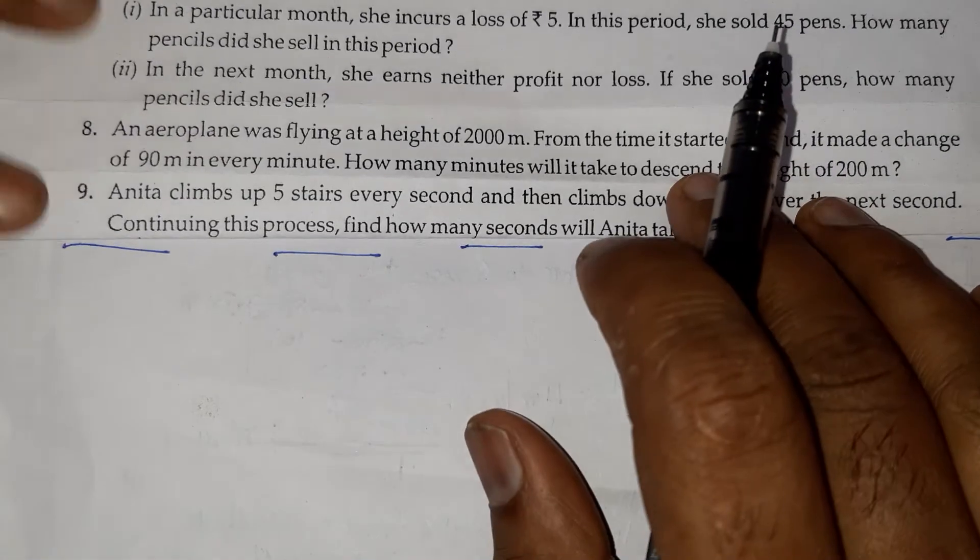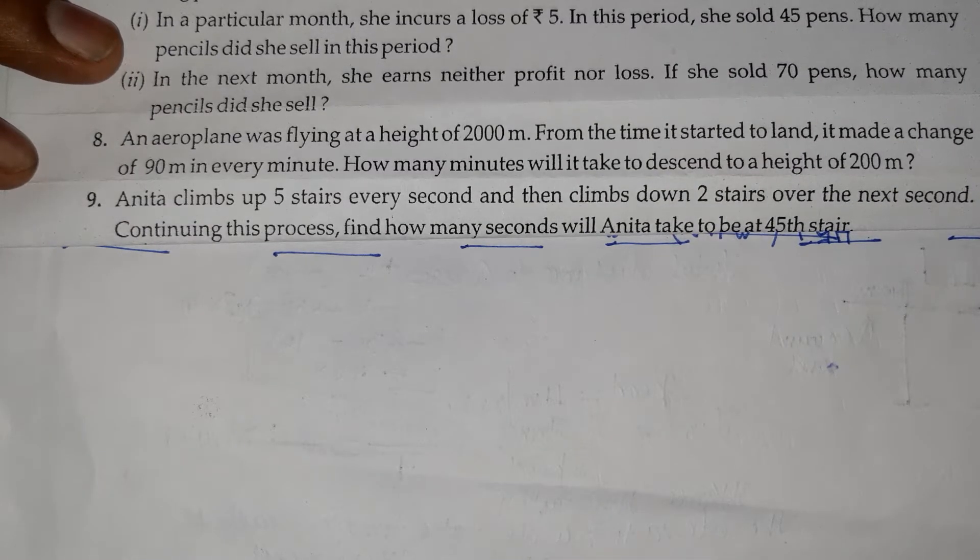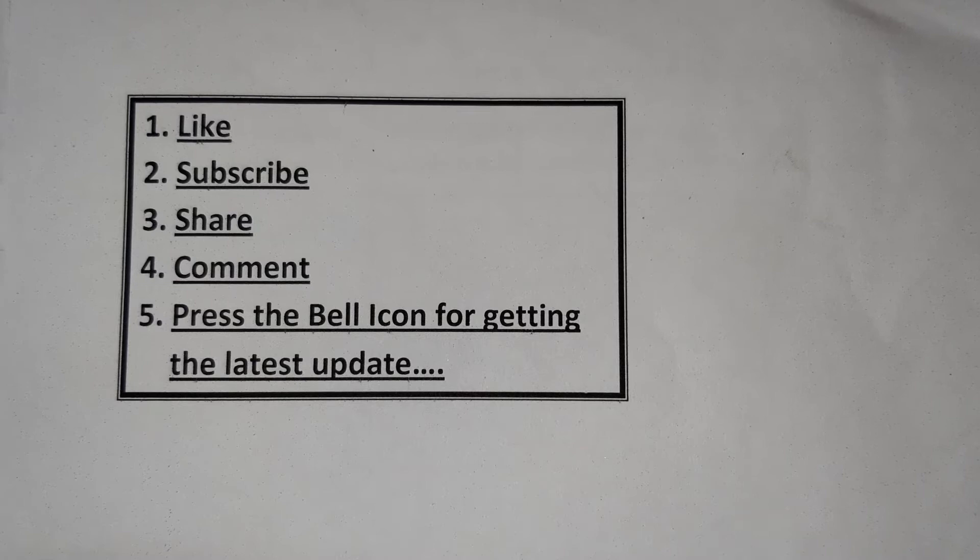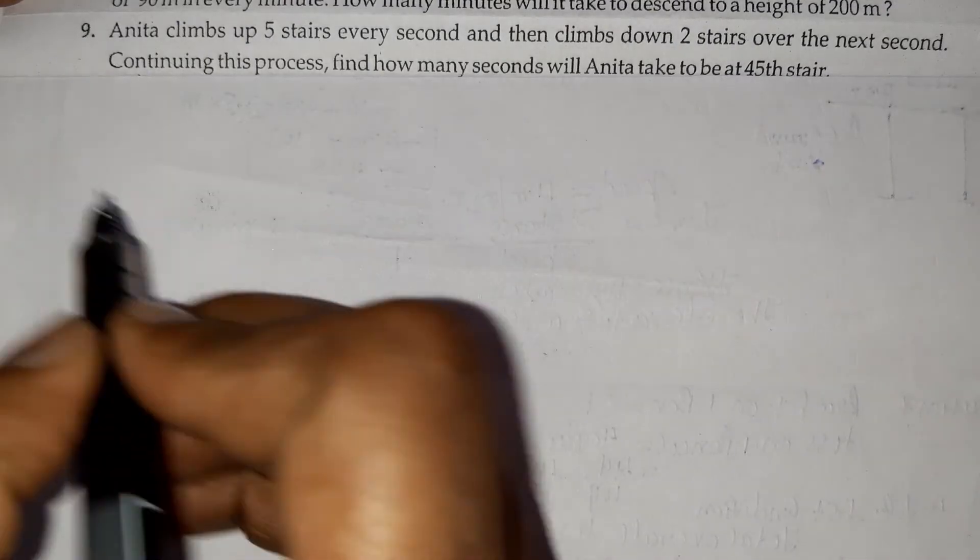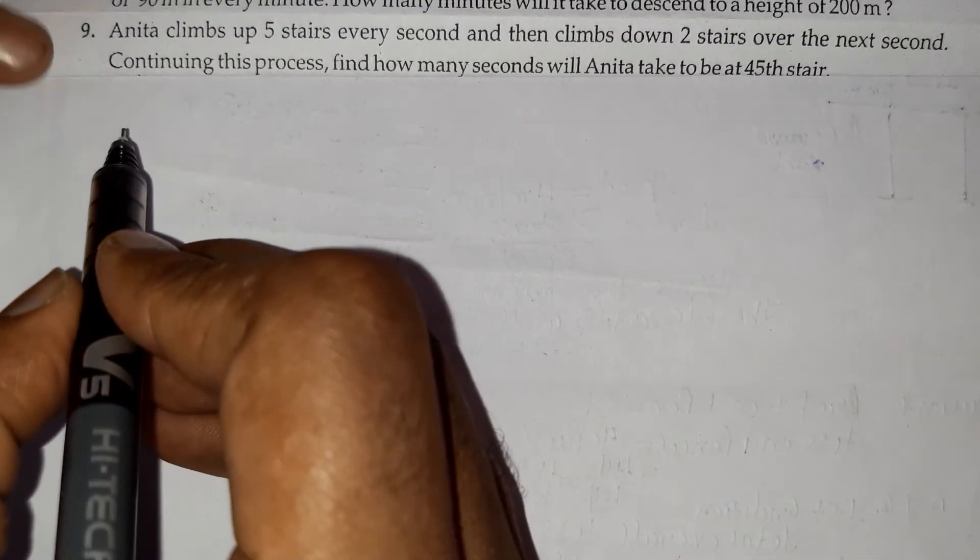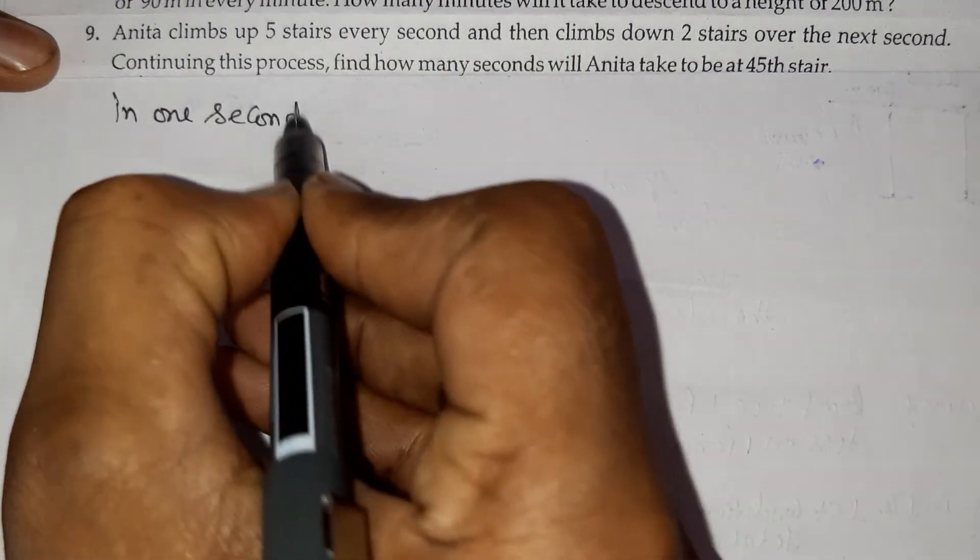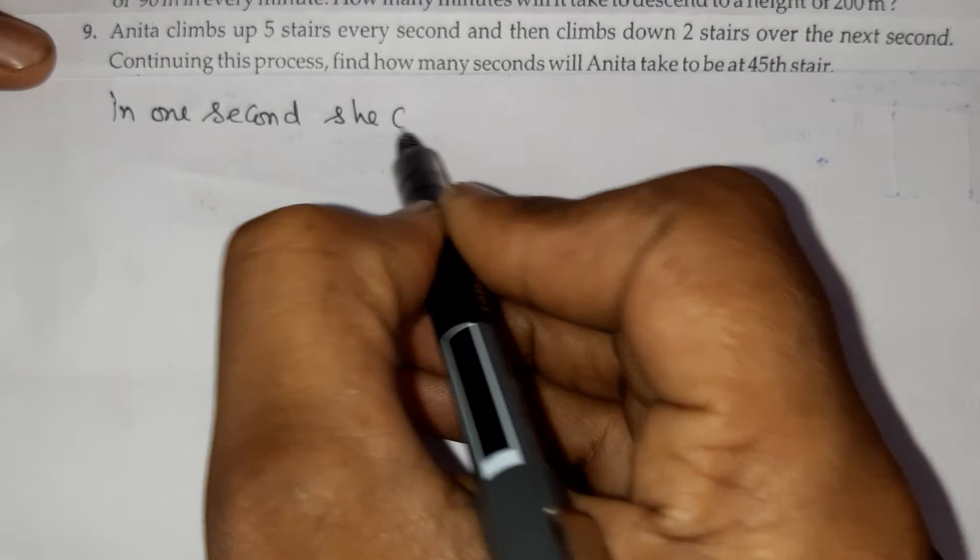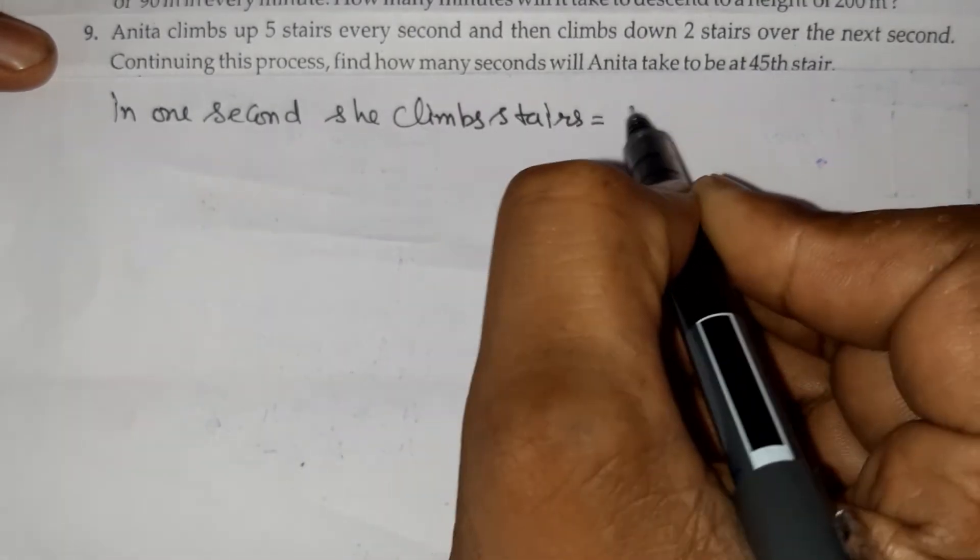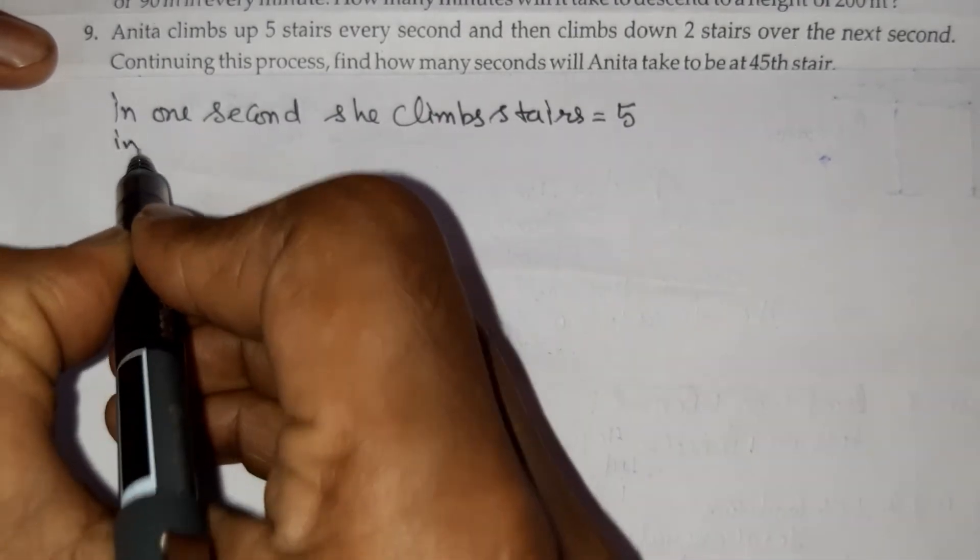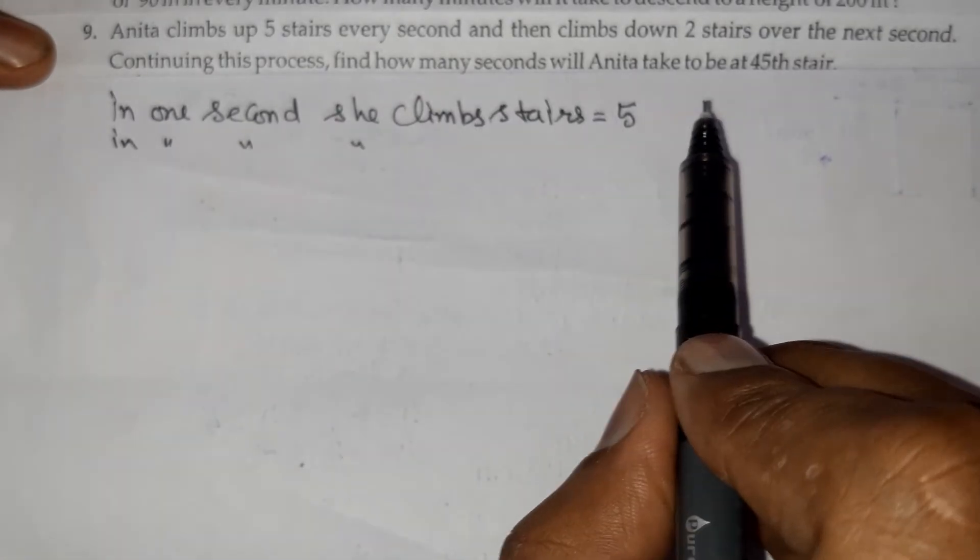Let's do it in an easy way. What is Anita doing? She climbs 5 steps in one second - so she climbs stairs at 5 per second.